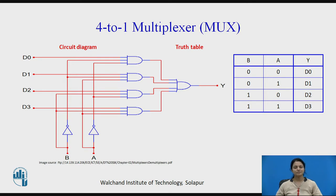Multiplexers come in many types: 2-to-1, 4-to-1, 8-to-1, and 16-to-1, as per our requirement. This is the circuit diagram of a 4-to-1 multiplexer or MUX. We have inputs D0, D1, D2, and D3, and output Y. When we want to select one of these four inputs, we need 2 select lines — A and B — since there are 4 options.